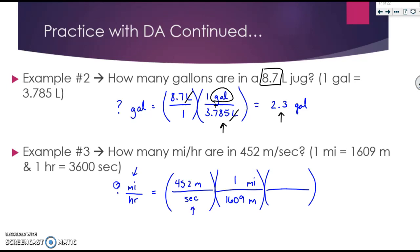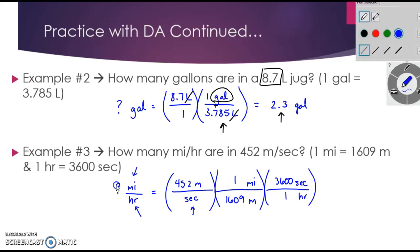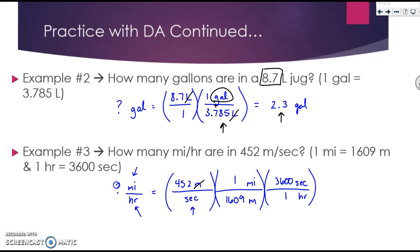Seconds right now is on the bottom, so I need to get rid of it — it needs to disappear and cross out. Therefore, seconds is going to go on top, and hours will go on the bottom. I add in my numbers: there are 3600 seconds in one hour. I can cross out meters because it's both top and bottom, and I can cross out seconds because it's both top and bottom. Mathematically, I usually go in order and ignore the ones: take 452, divided by 1609, then times 3600. Alternatively, you can multiply straight across and then do the division. Either should work and give you the correct answer.